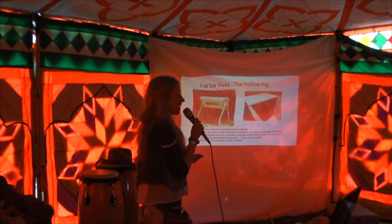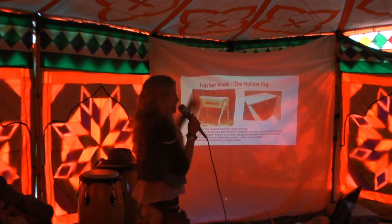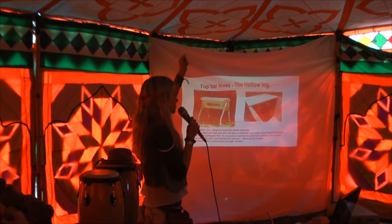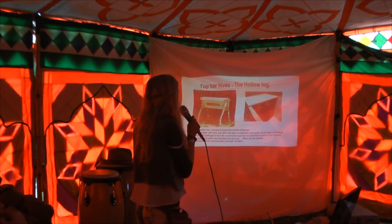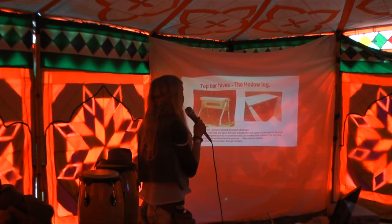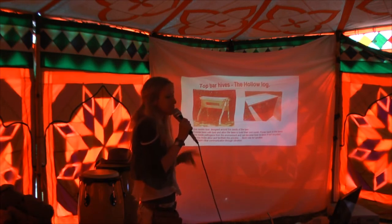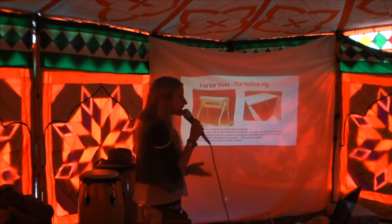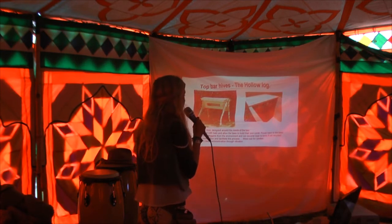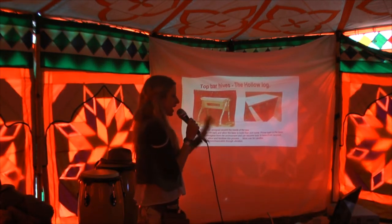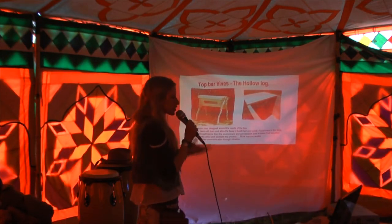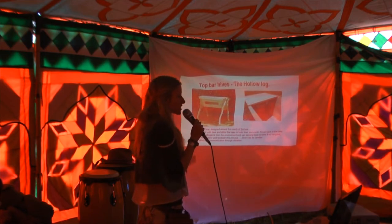Then they do what bees do — they build comb in such beautiful sacred geometry. When you hold it up to the sun it brings a tear to your eye. They build it down in long U-shapes, and building wax is part of their natural process — it keeps them healthy and strong. It basically puts the power back into the hands of the bees, because then they have a choice of how to build their own home and how to live.